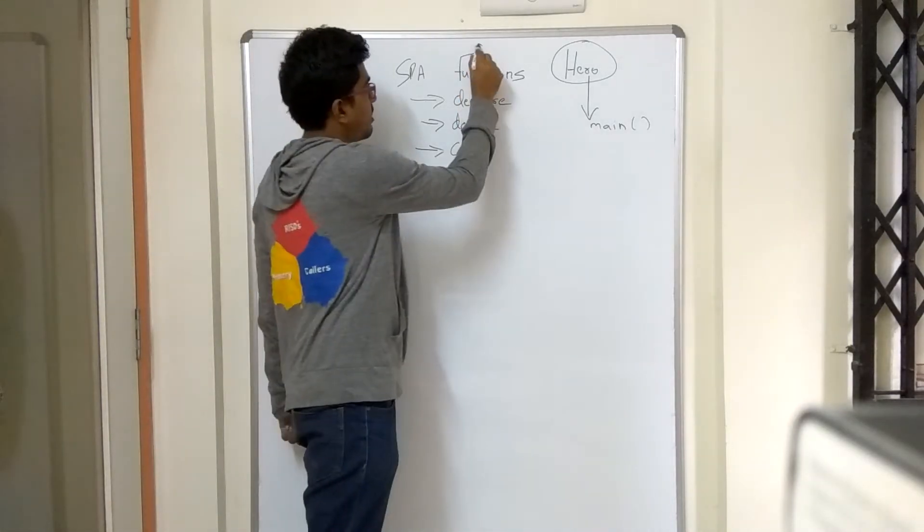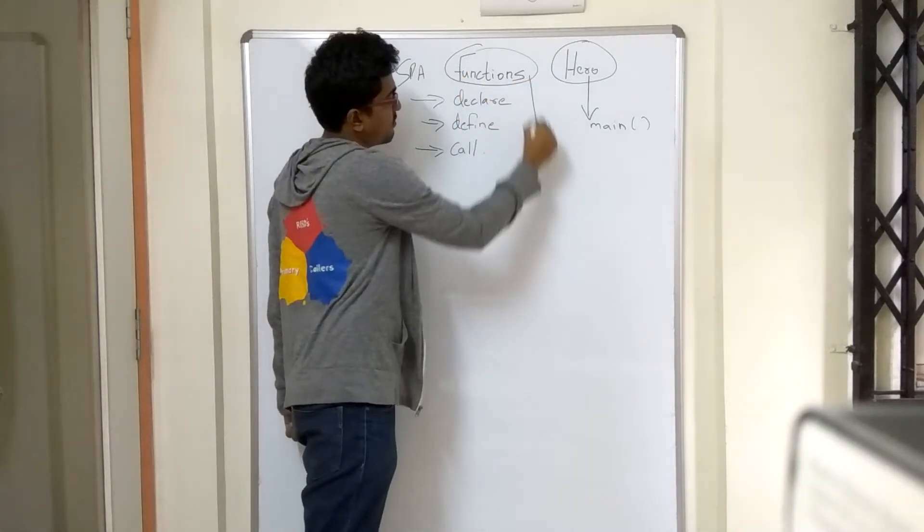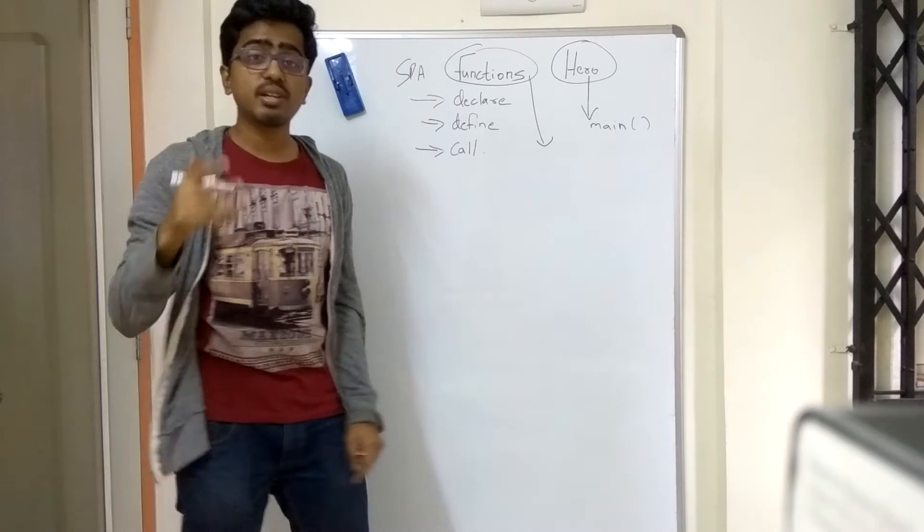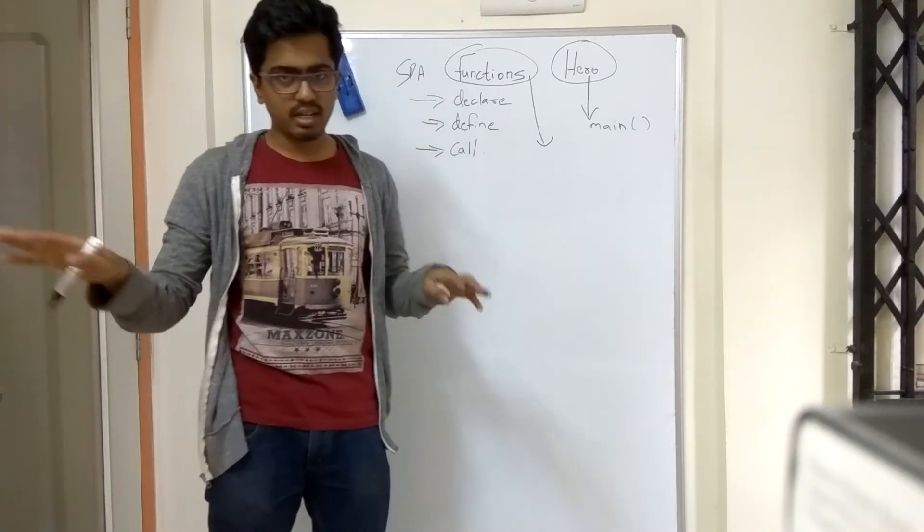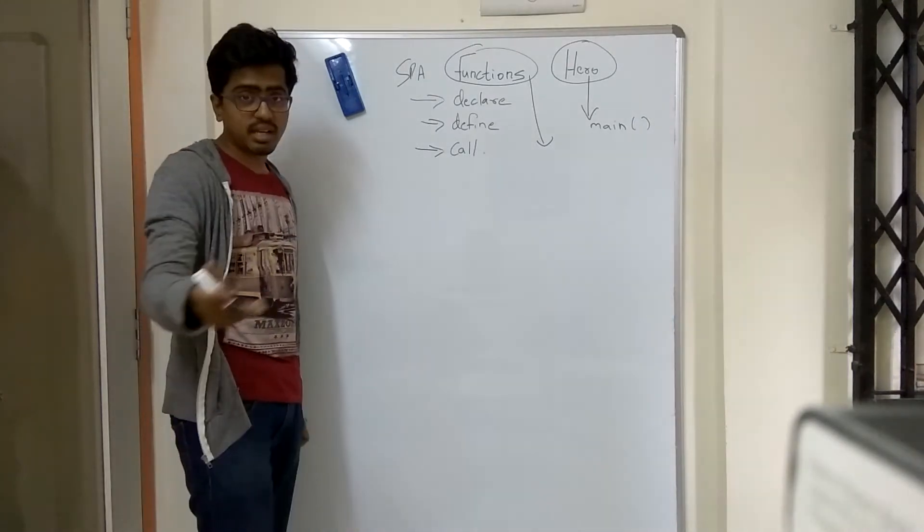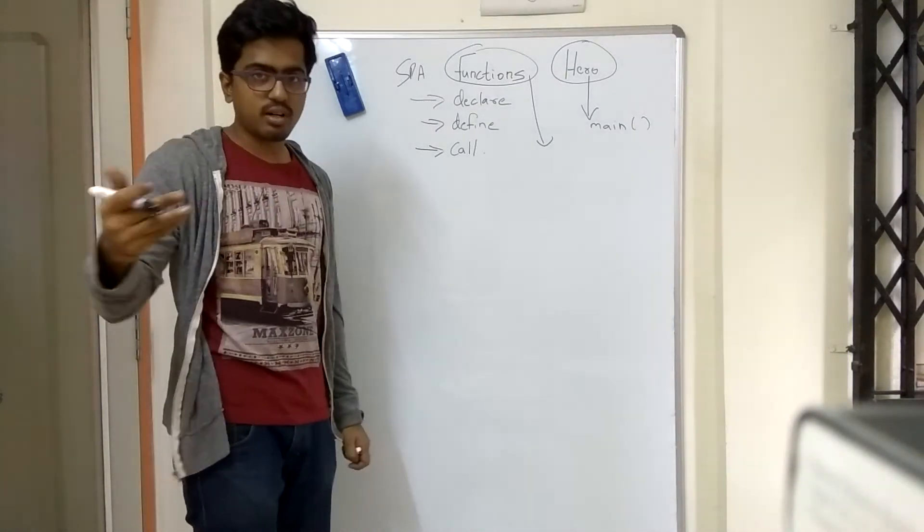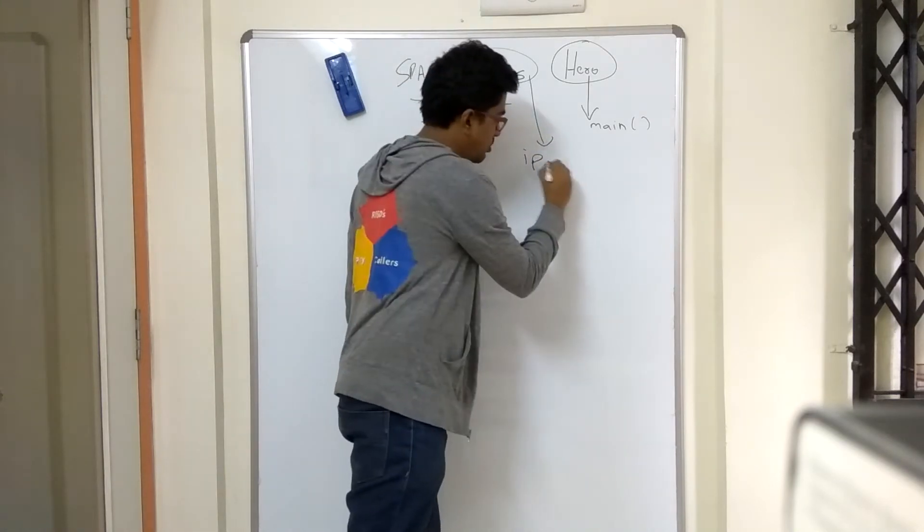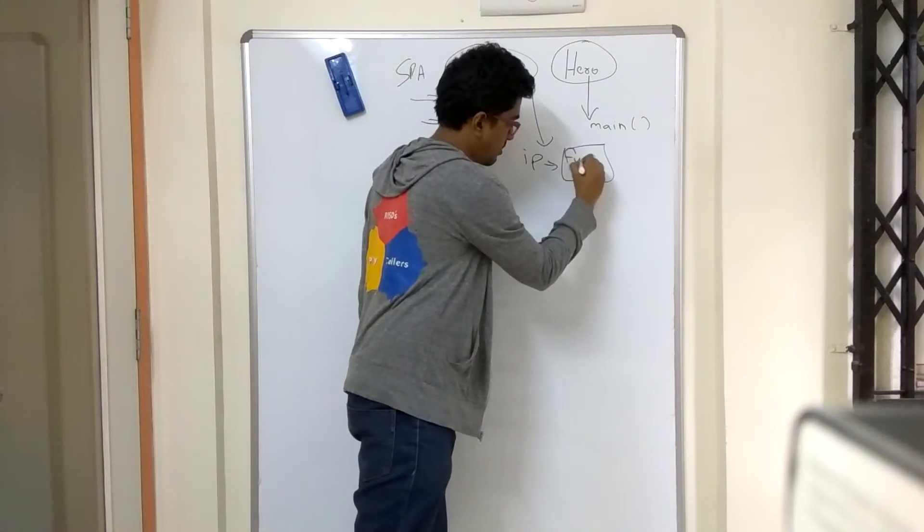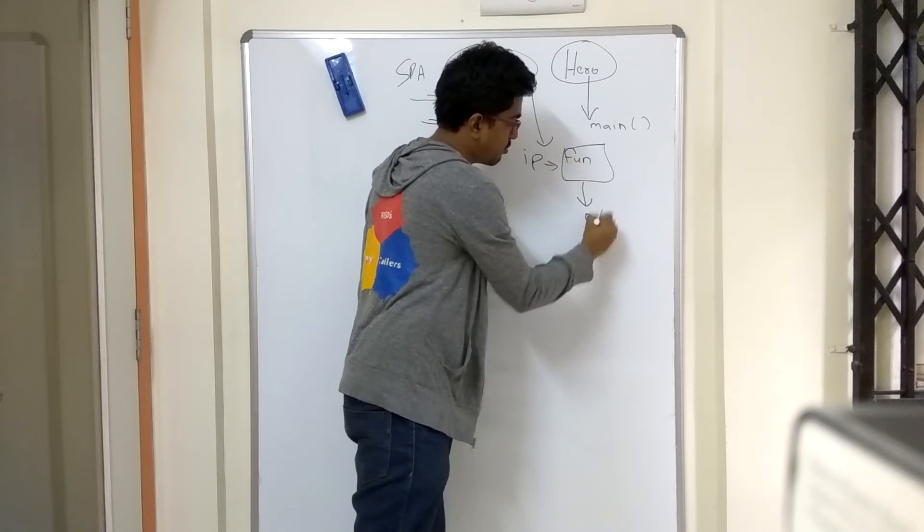Now what does the name function tell you? Function tells you that it is designed to do something. Something can be anything. Now to do something, it requires input and it gives you output. So every function has input that goes into the function and then you get an output.